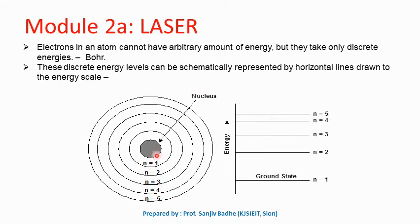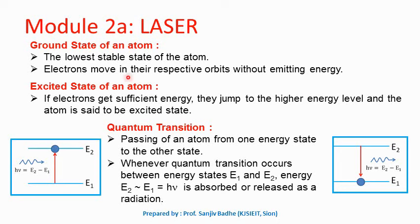According to Bohr, electrons in an atom cannot have arbitrary amounts of energy but take only discrete energy values. These discrete energy levels can be schematically represented by horizontal lines drawn to the energy scale. In an atom, we have a positively charged nucleus and electrons revolve around it in different orbits. When all the electrons move in their respective orbits without emitting energy, the energy of the atom is at its lowest — this lowest stable state is called the ground state of the atom. If some electrons get sufficient energy, they can jump to a higher energy level and the atom enters the excited state. Transition of an atom from one energy state to another is called a quantum transition.